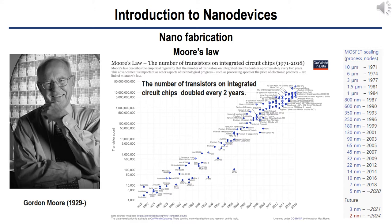A FinFET has three sides of the channel covered by gate, while some nanowire transistors have a gate-all-around structure, providing better gate control. One of the key challenges of engineering future nanoscale transistors is the design of gates. As device dimensions shrink, controlling the current flow in the thin channel becomes more difficult. Compared to FinFETs, which have gate dielectric on three sides of the channel, gate-all-around MOSFET structure has even better gate control. In 2006, a 3-nanometer transistor was developed based on FinFET technology. In 2015, IBM demonstrated 7-nanometer node chips with silicon-germanium transistors.